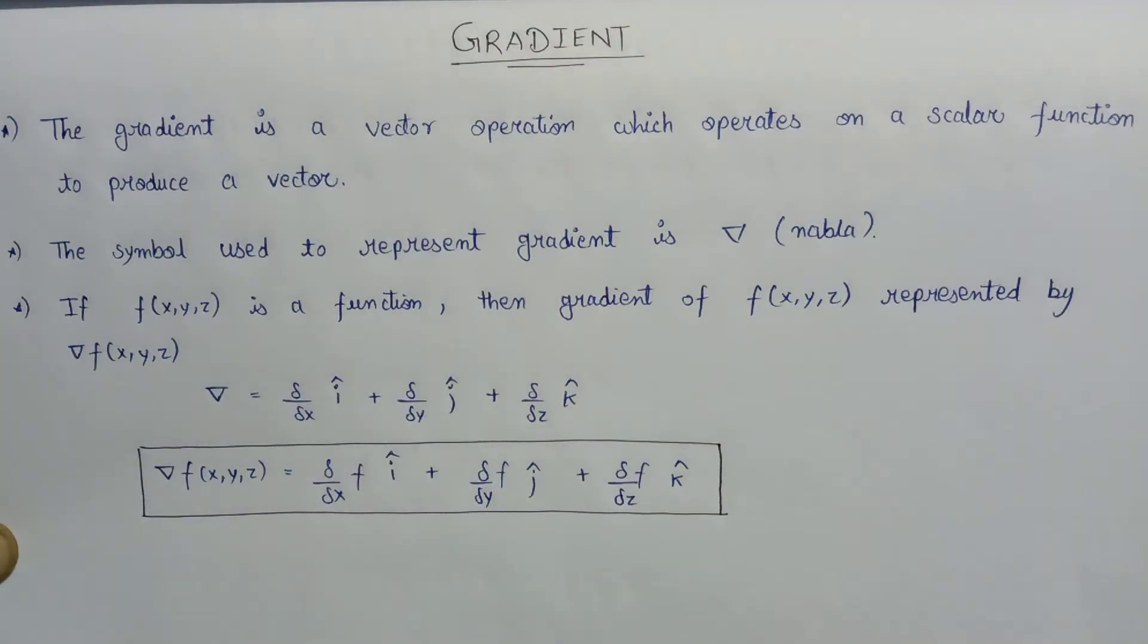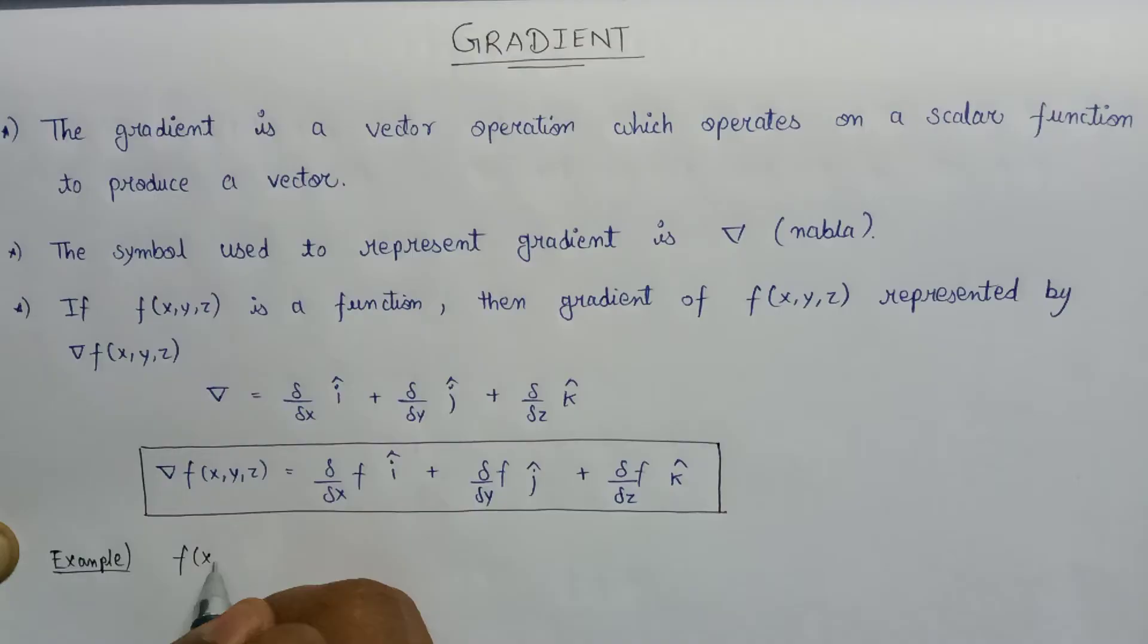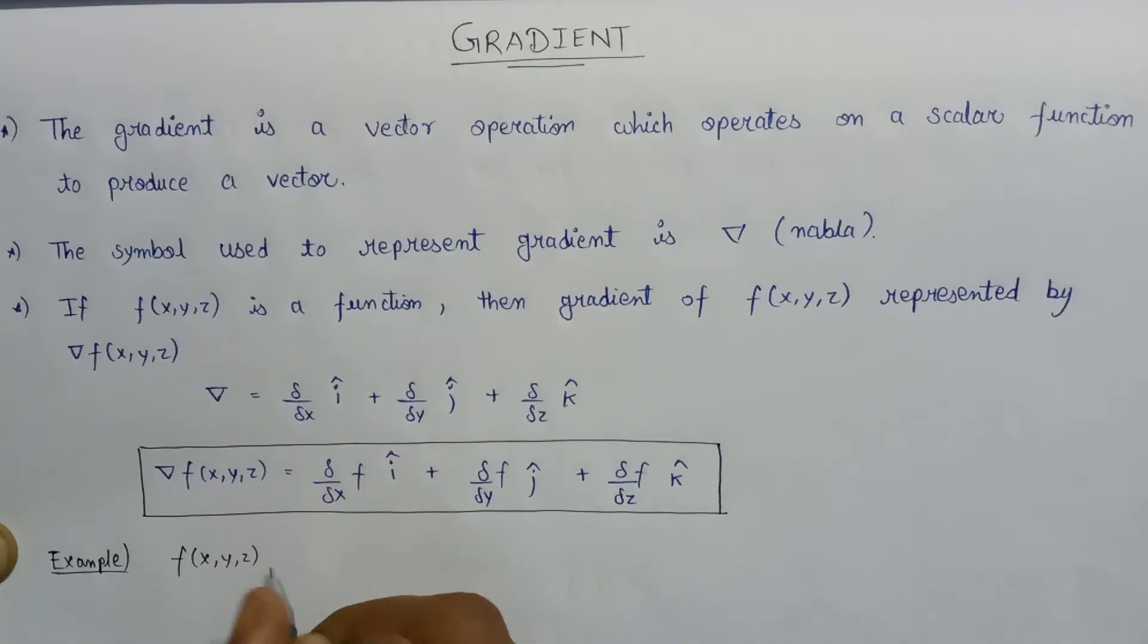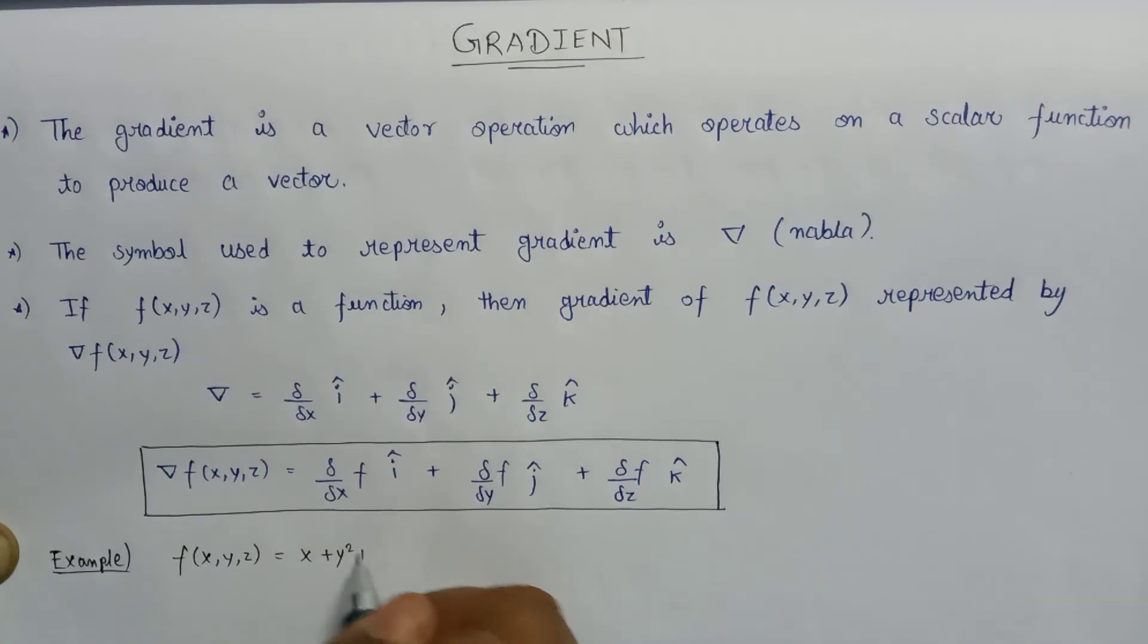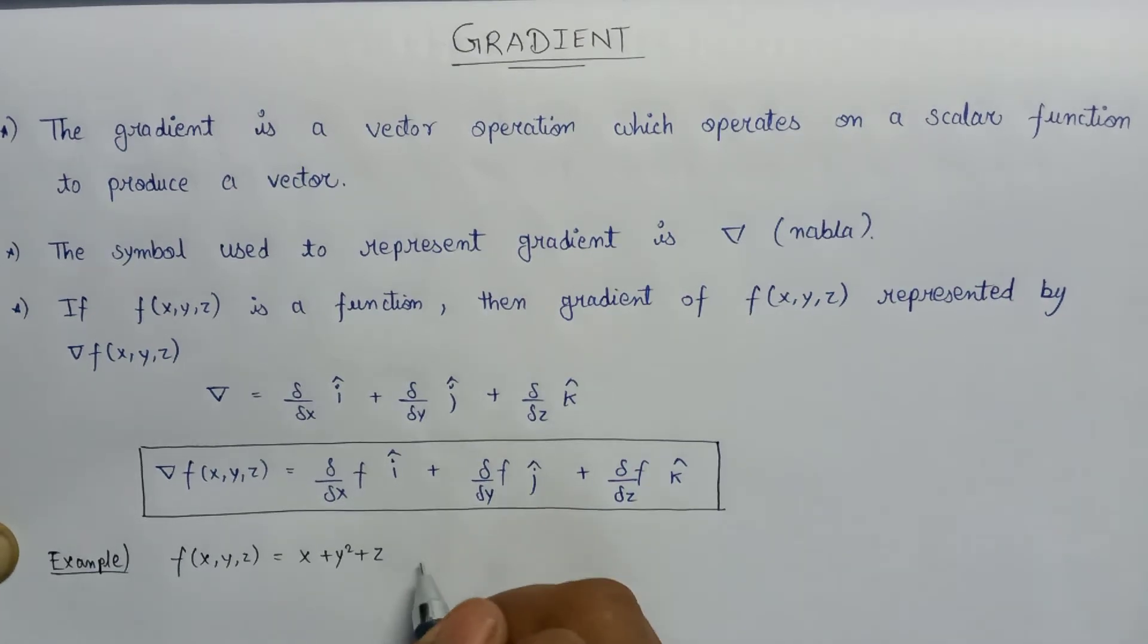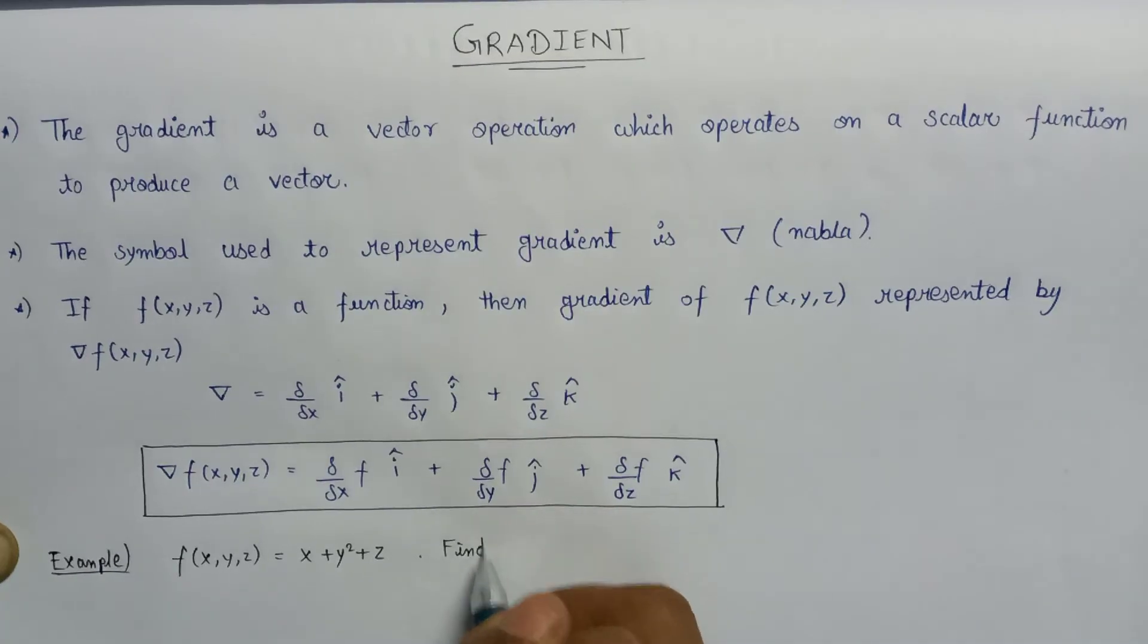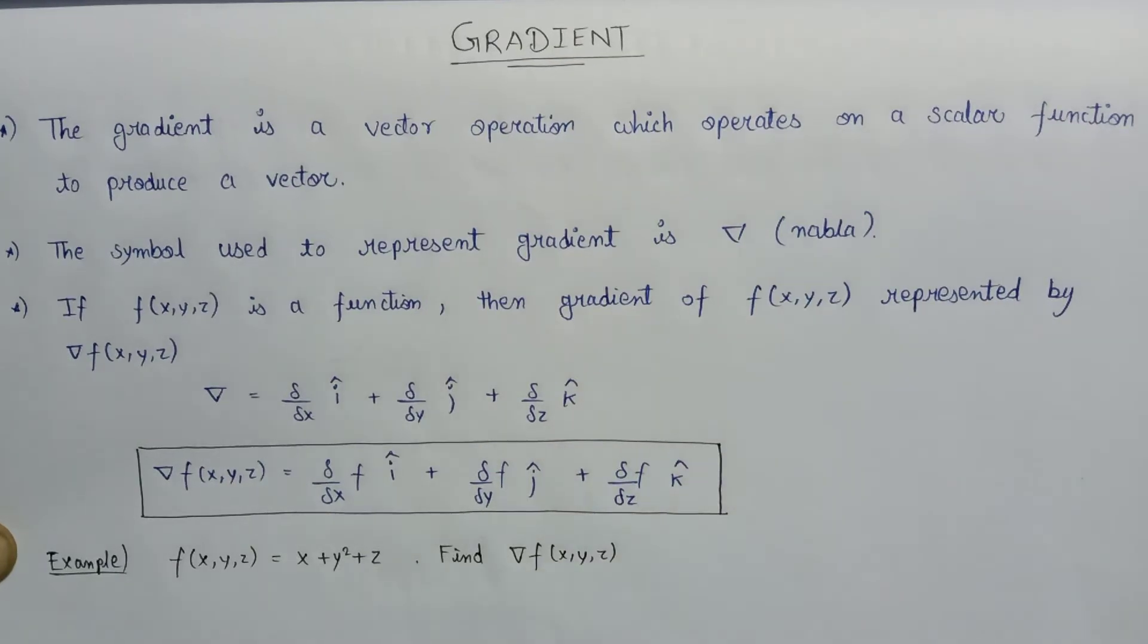Now let us have a look at an example in which we are given a function having x, y, and z coordinates that is given as x plus y square plus z. In this question, what we need to do is we need to find del f(x,y,z). Simply by the help of this formula we can find it easily.